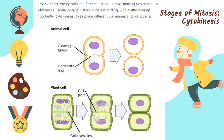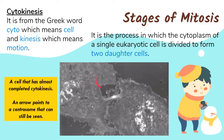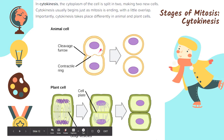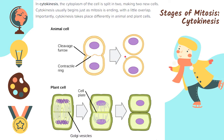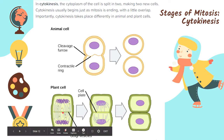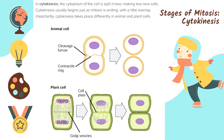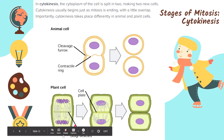In animal cells, a cleavage furrow forms and the cell membrane pinches inward until it divides into two. In plant cells, which have both a cell membrane and a cell wall, a new cell wall — called a cell plate — forms in the middle. This cell plate grows until the cell is now divided into two new daughter plant cells.